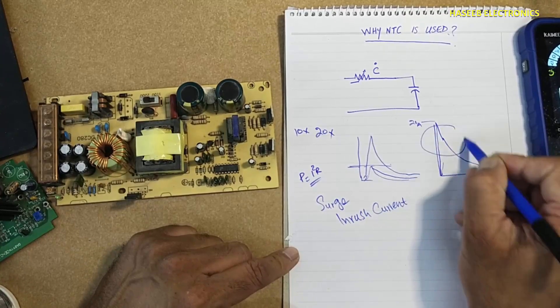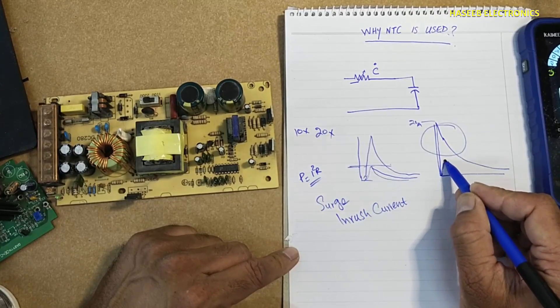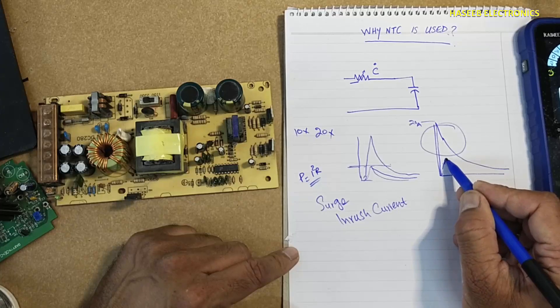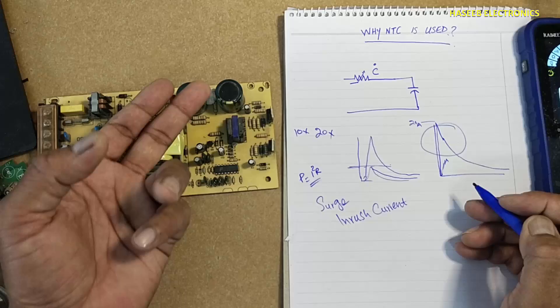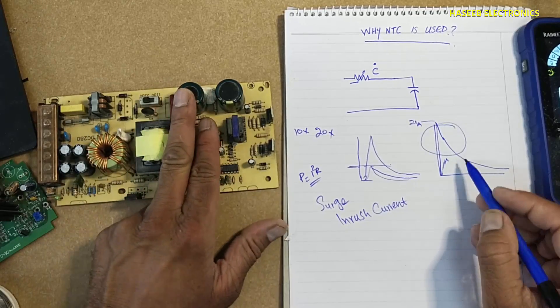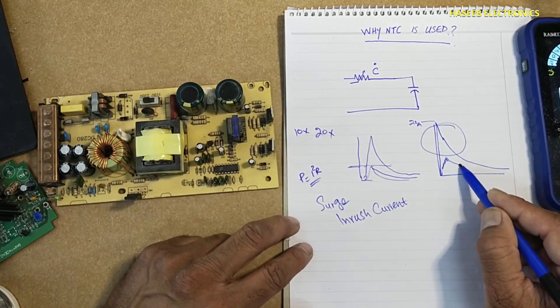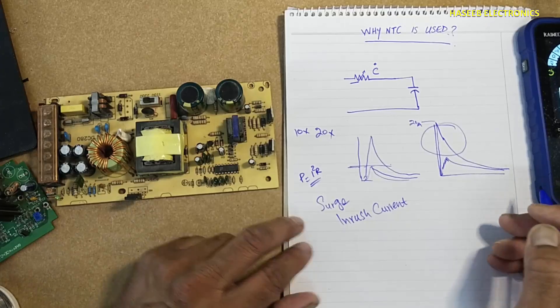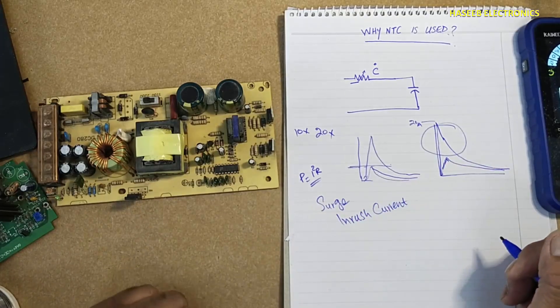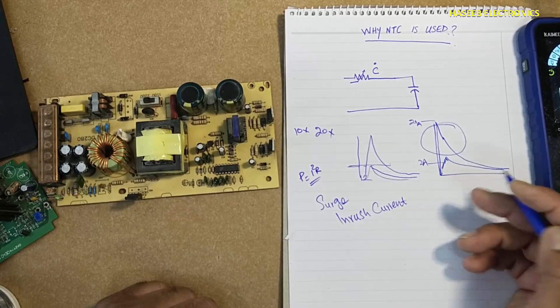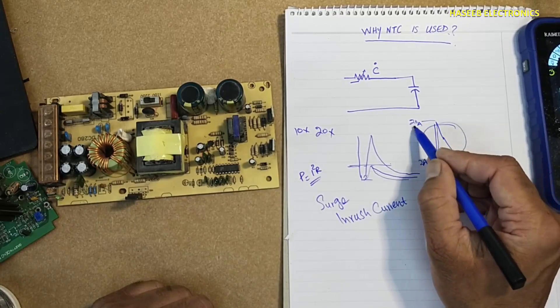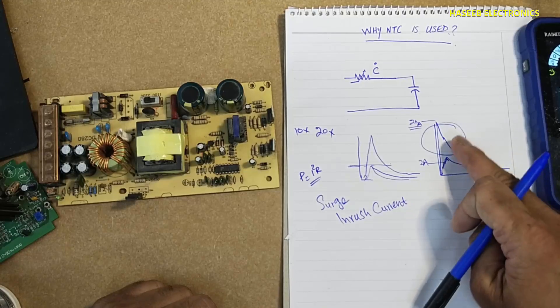That is this current. So it will limit the current at this level. Then voltage will start building in these capacitors and the current will become normal and capacitors will be charged at regular 2 ampere, for example the system current 2 ampere. It will protect from these 20 amperes. It is surge current.